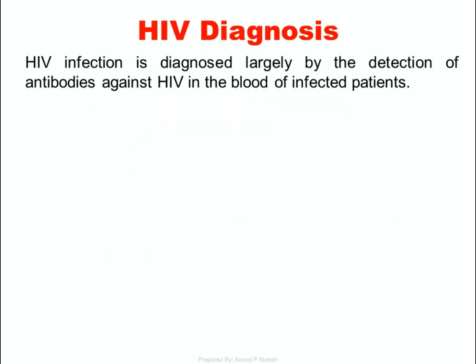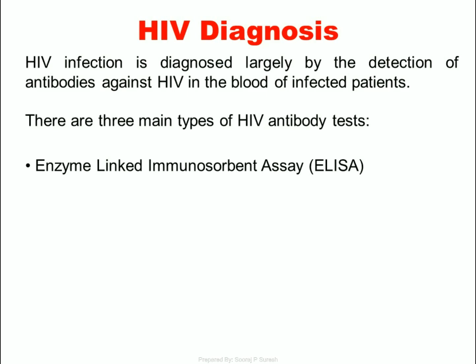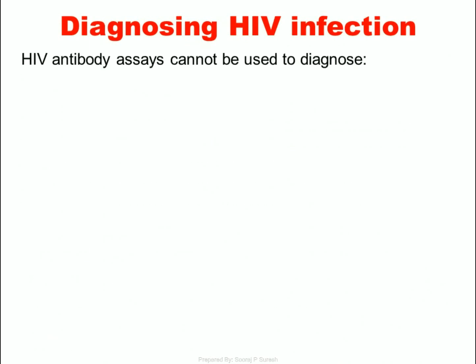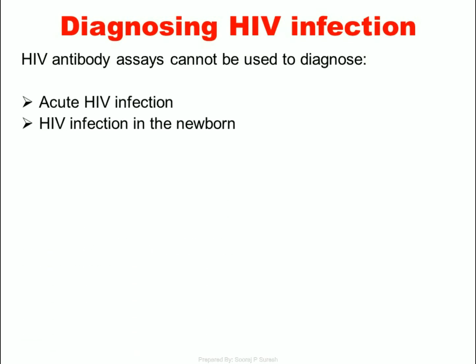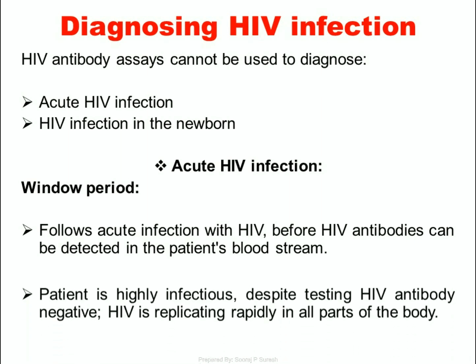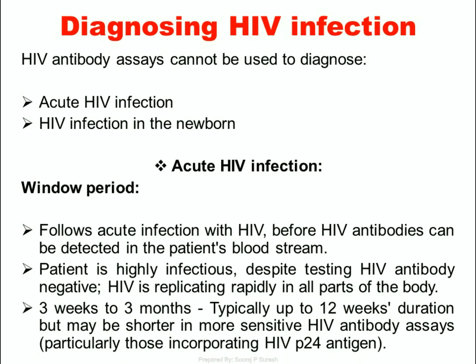HIV Diagnosis: HIV infection is diagnosed largely by the detection of antibodies against HIV in the blood of infected patients. There are three main types of HIV antibody tests: Enzyme-linked immunosorbent assay (ELISA), Western blot assay, and rapid HIV tests. HIV antibody assays cannot be used to diagnose acute HIV infection or HIV infection in the newborn. The window period follows acute infection with HIV, before HIV antibodies can be detected in the patient's bloodstream. During this period, the patient is highly infectious despite testing HIV antibody negative, as HIV is replicating rapidly. The window period is typically 3 weeks to 3 months, up to 12 weeks, but may be shorter with more sensitive assays incorporating HIV P24 antigen.